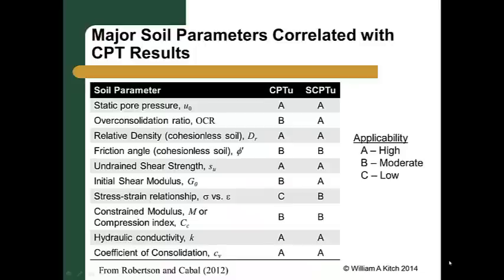The CPT can be used to determine a number of soil properties. This table lists possible soil properties that we can determine from CPT data. With the exception of the static pore water pressure, which is directly measured by the piezo cone, none of these soil properties come from a direct CPT measurement. Instead, the values of these properties are correlated to the CPT measurements of tip resistance, friction ratio, pore pressure, and shear wave velocity. Several decades of field measurements have been used to generate these correlations. The last two columns of the table give a qualitative idea of how good the correlations are for both the CPTU and SCPTU tests. The actual correlations are presented in Robertson and Cabal 2012.